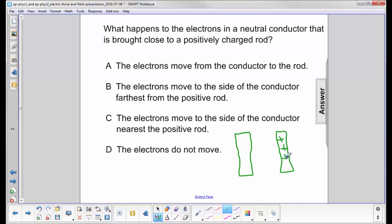As it's brought close, the electrons here will be attracted by the positive rod. So they're going to move to this side, leaving behind a positive charge on the other side of this neutral conductor.